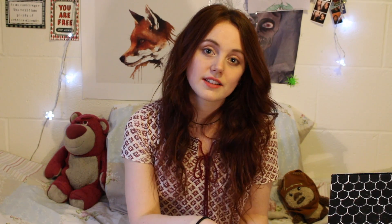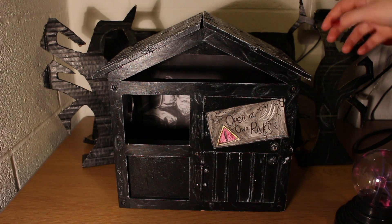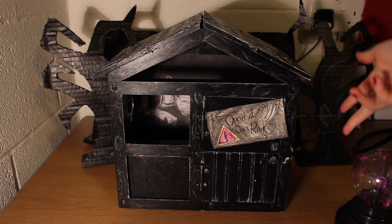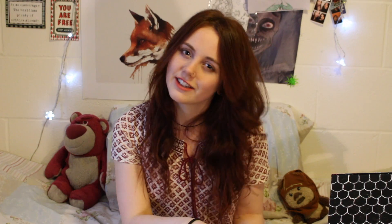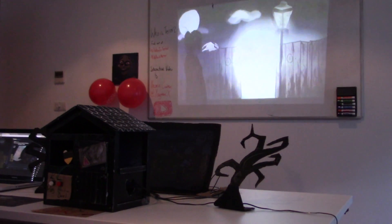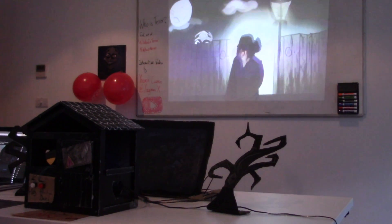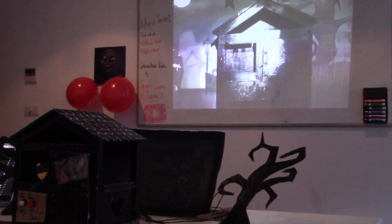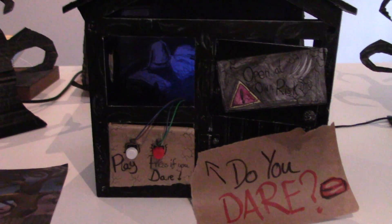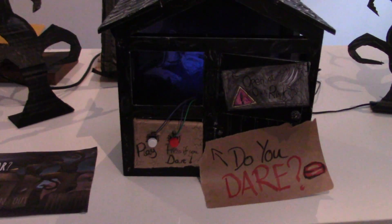The end product was a painted doll's house which held the Raspberry Pi, an object of Terra, and the speakers. The video was played from an HDMI cable that ran from the Raspberry Pi straight into a projector that was projected onto the wall. Using two buttons from the GPIO pins of the Raspberry Pi, one button could play the video, and the other button was one that could be pressed if you felt brave enough.